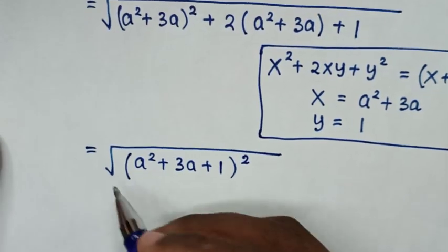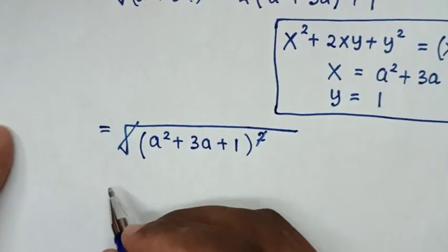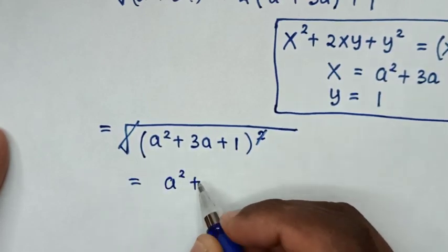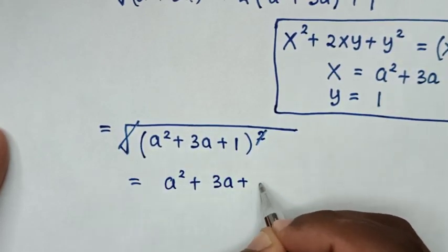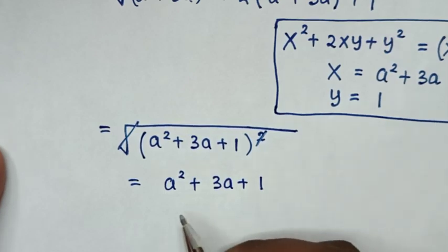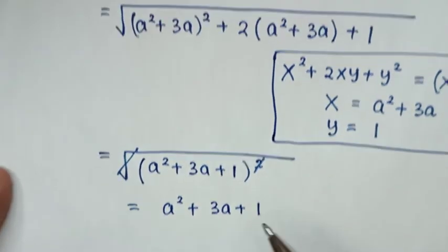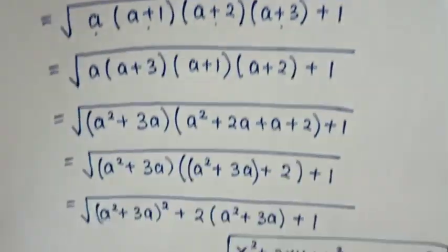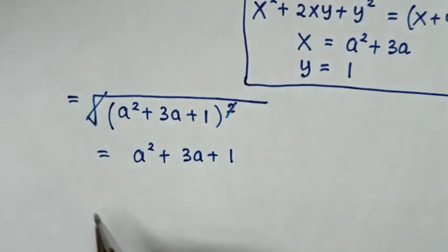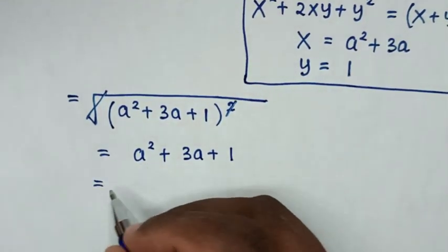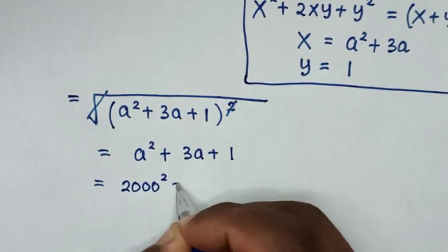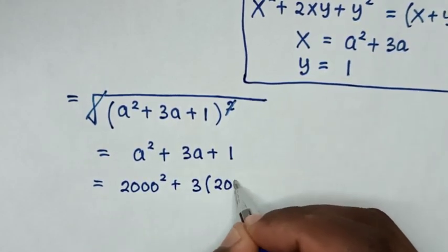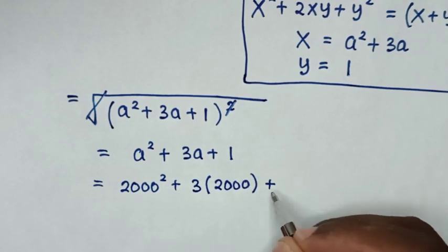The square root cancels the square, so it is equal to a squared plus 3a plus 1. Now we substitute back the value a equals 2000, giving us 2000 squared plus 3 times 2000 plus 1.